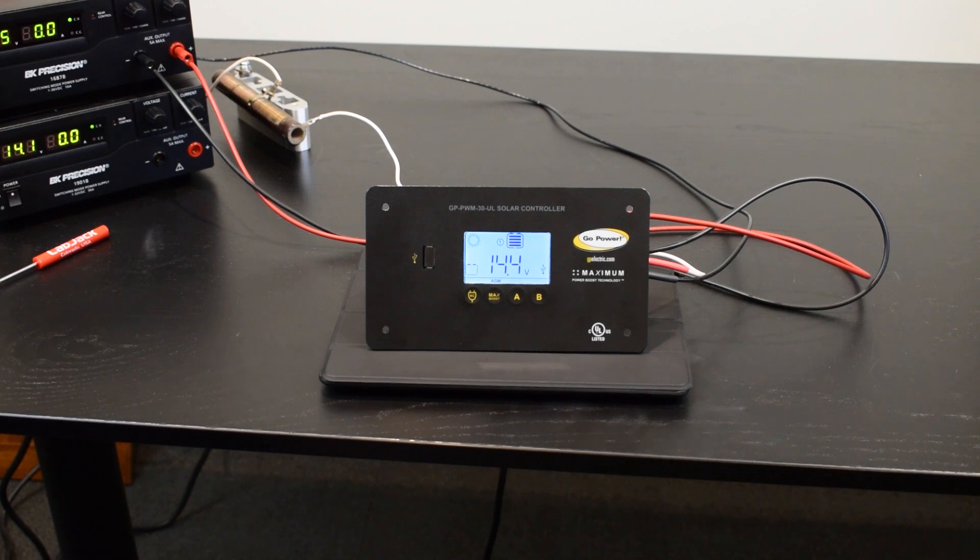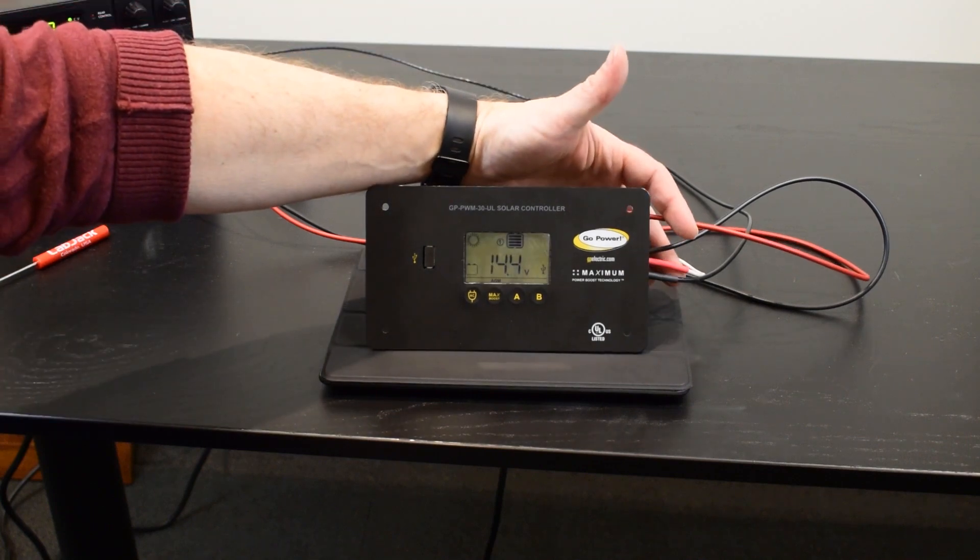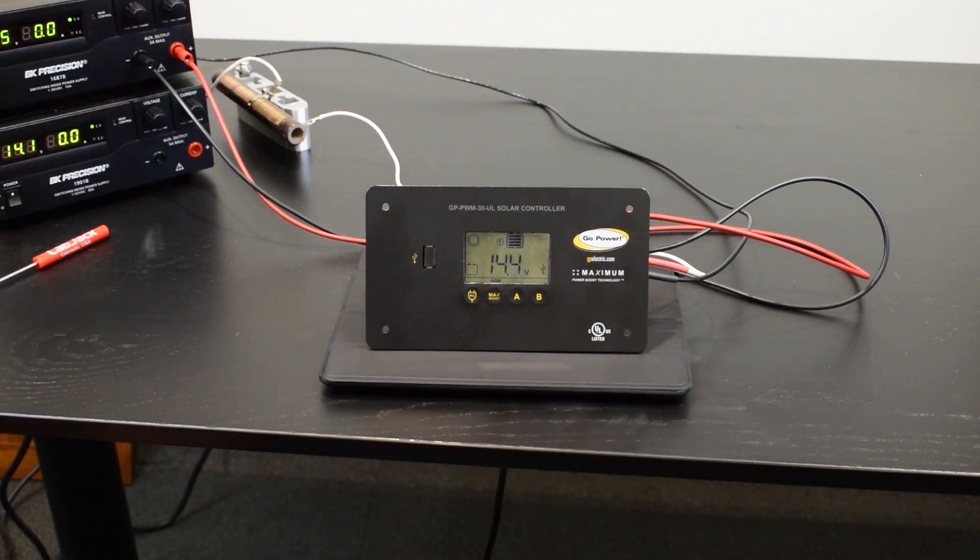If the flashing does stop, the next step would be to try what's called a hard reset on the controller where you disconnect all four wires on the back of the controller. Isolate the controller for about a half hour so that it slowly discharges and loses its error rate.